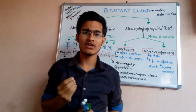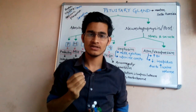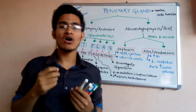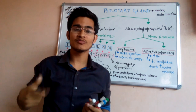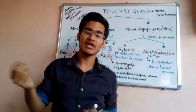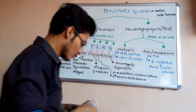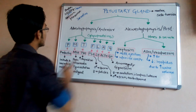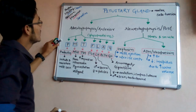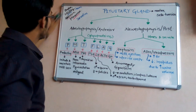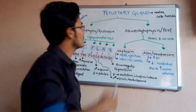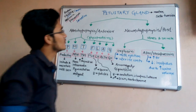Insects secrete some kind of chemical messengers to attract organisms of the same species but of the opposite sex. For example, males secrete chemicals to attract females. Those particular hormones which stimulate sexual attraction in organisms are known as pheromones.